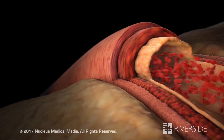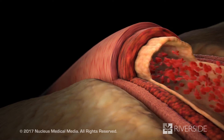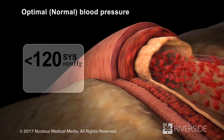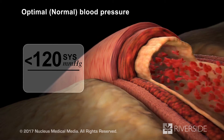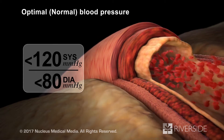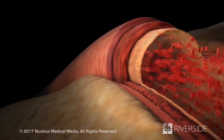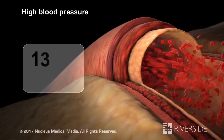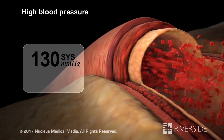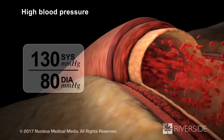While your blood pressure may change throughout the day, it should optimally be less than 120 millimeters of mercury for systolic pressure, and less than 80 millimeters of mercury for diastolic pressure. If your systolic pressure frequently stays above 130, or your diastolic pressure frequently stays above 80, you have high blood pressure.